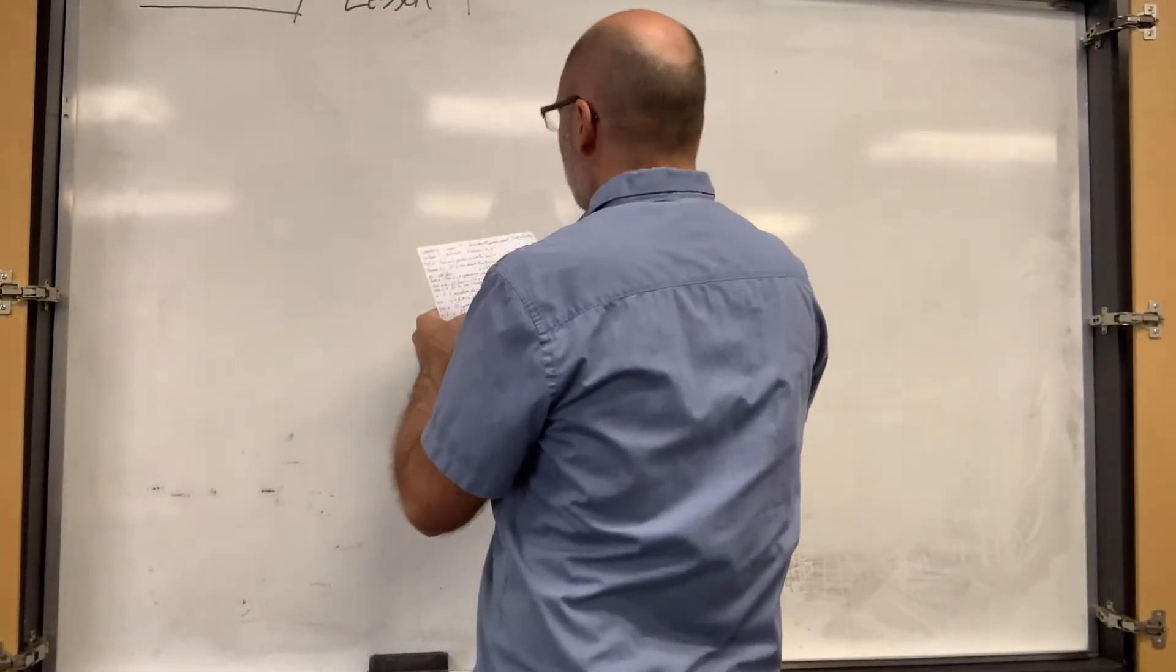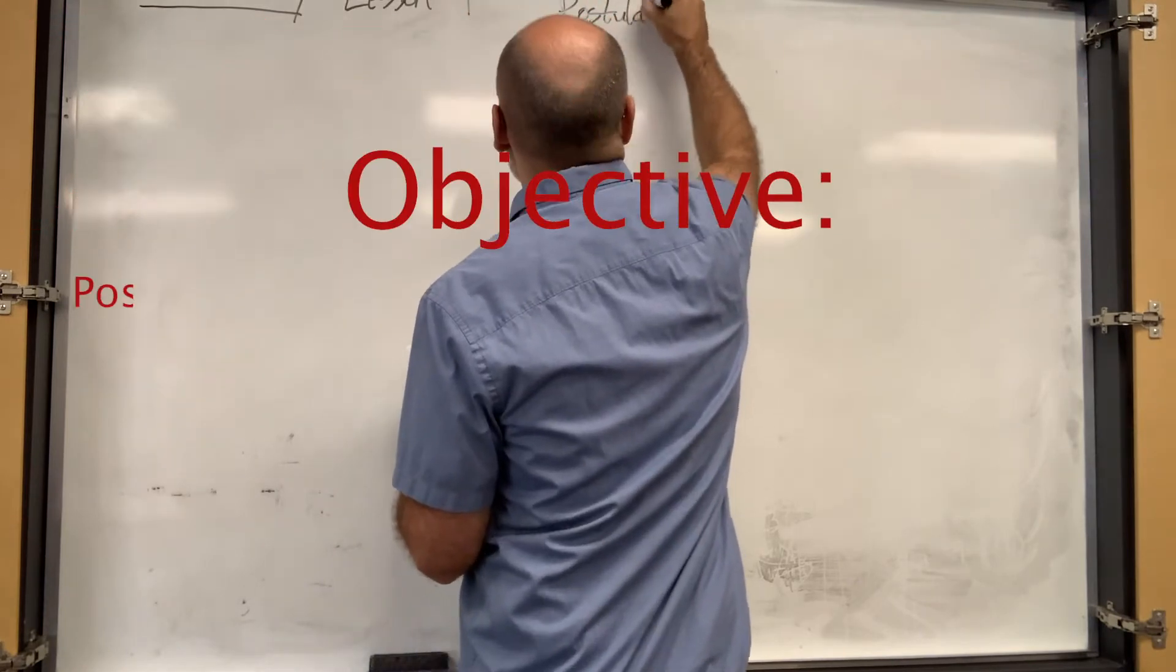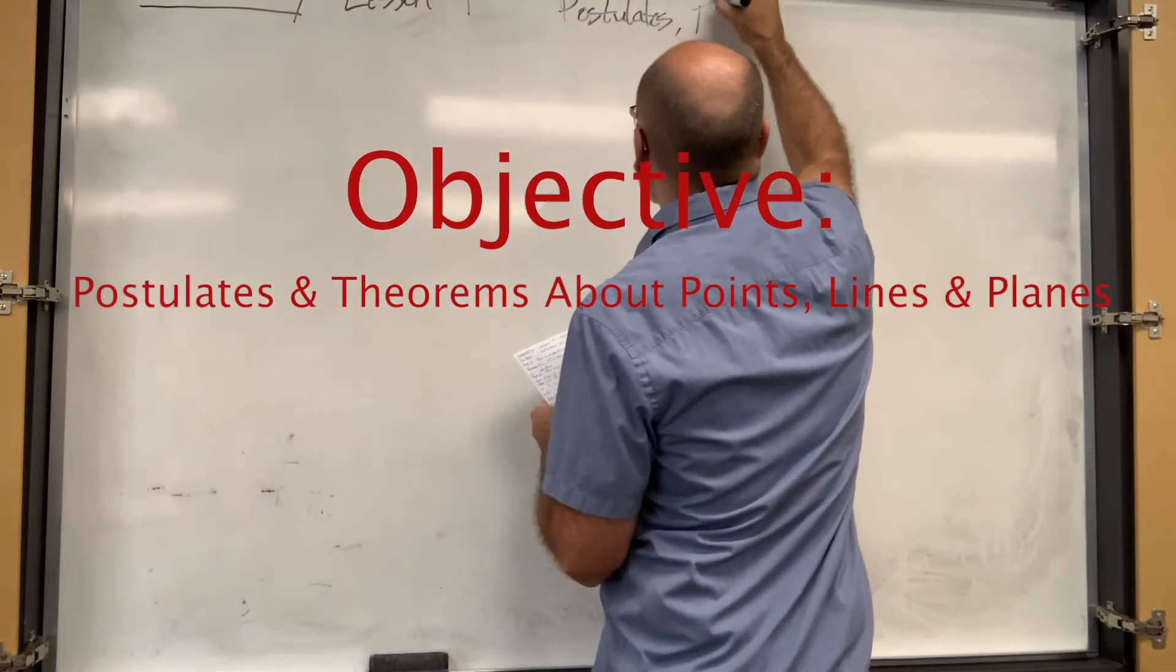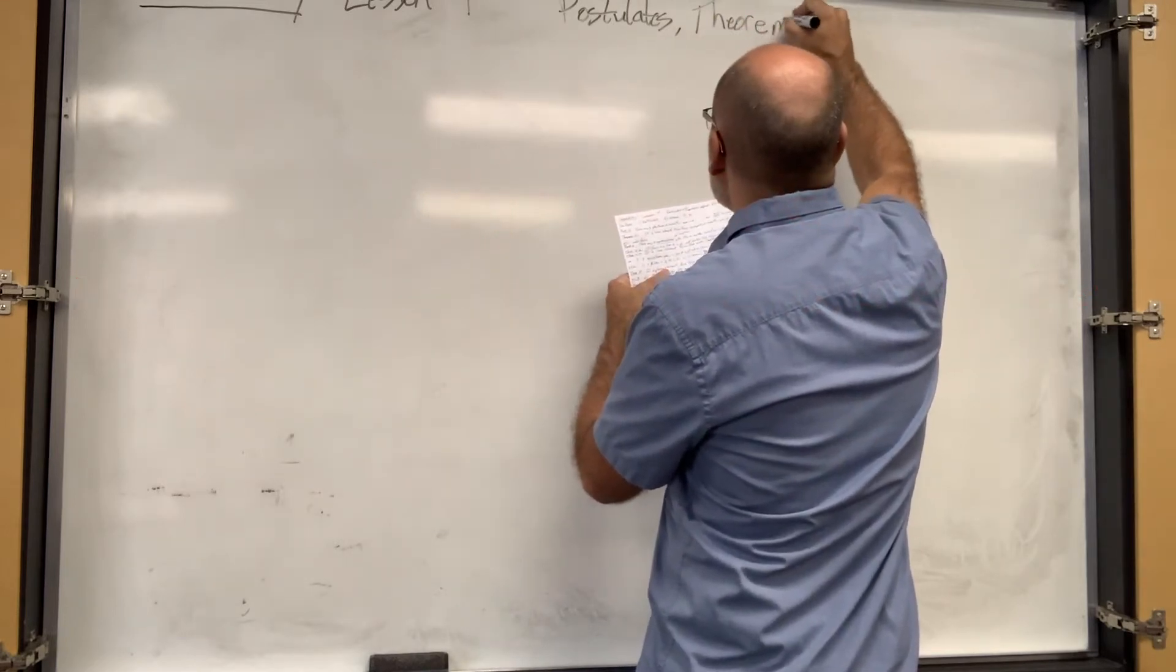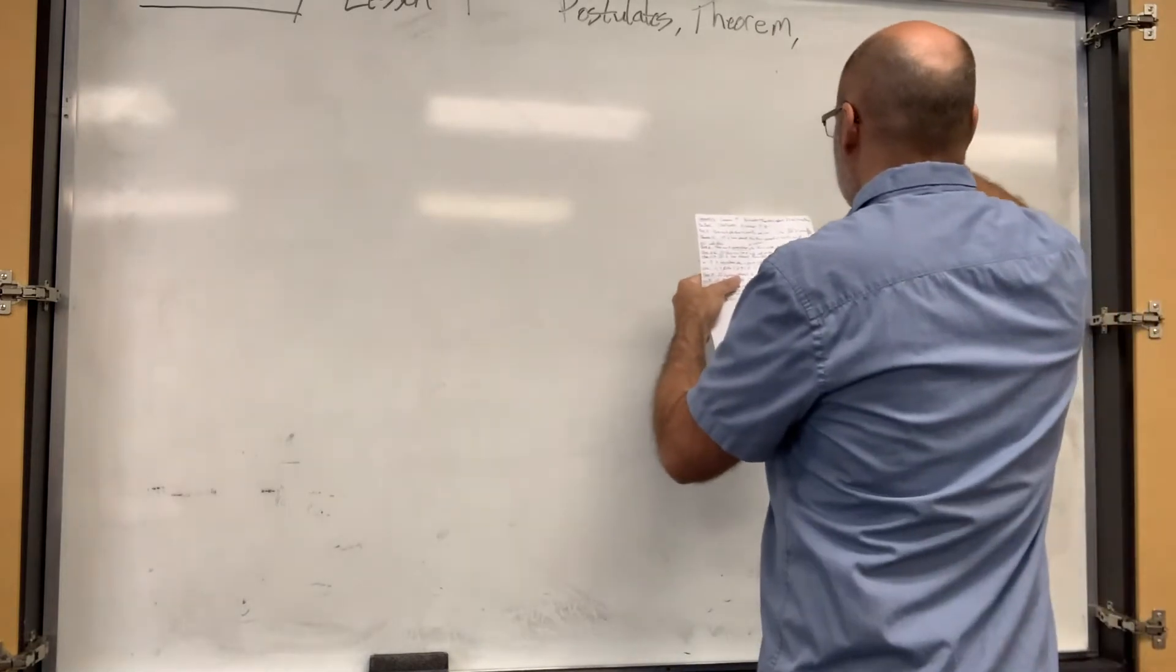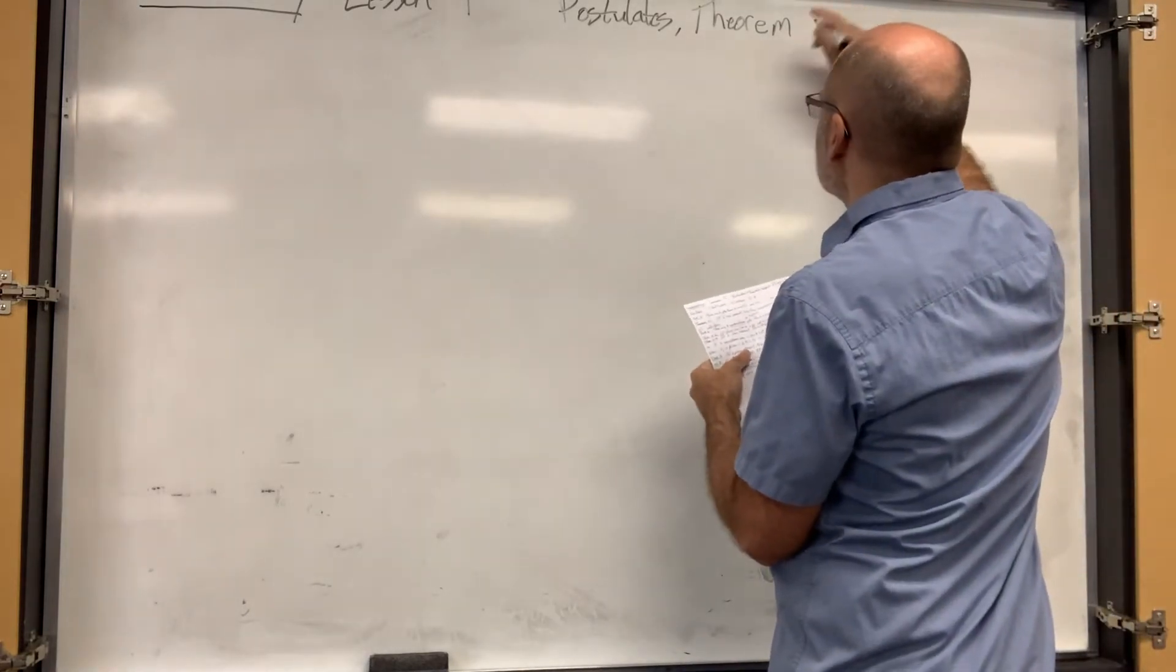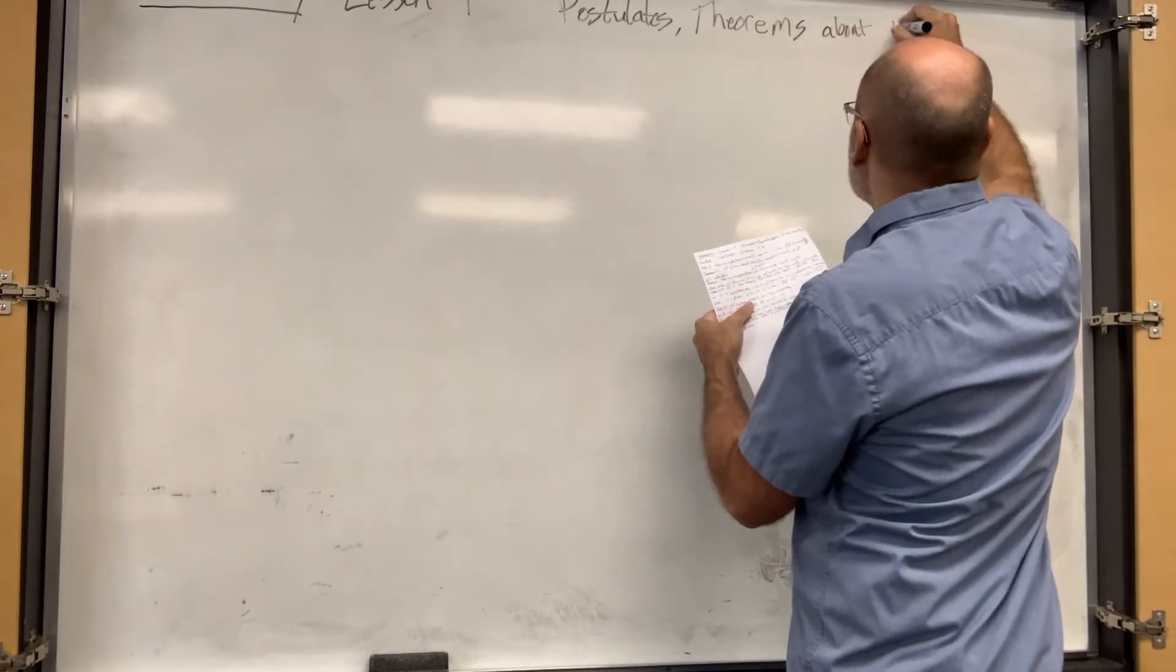Alright, so lesson four. We're talking about postulates and theorems. We're already talking about postulates, but we're talking about this new concept called theorems. Theorems sound like theories, and basically theorems are theorems until we prove them. Postulates and theorems about points, lines, and planes.